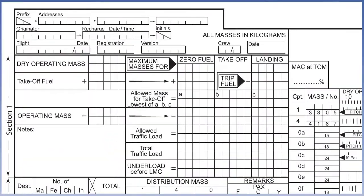We will progressively enter the required data into the appropriate box to complete Section 1 of Part A, starting with the allowed mass for take-off — the lowest value of A, B, or C. Start by entering the dry operating mass, 34,300 kilograms, and the maximum masses for zero fuel, 51,300 kilograms, and landing, 54,900 kilograms. Enter the fuel data, starting with the take-off fuel, 14,500 kilograms, in both the first two boxes, followed by the trip fuel, 8,500 kilograms, in the third box.